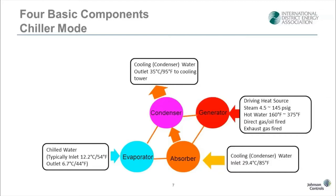This webinar is not about basics of absorption chillers, but let us quickly review the four main components: the evaporator, the absorber, the condenser, and the generator. The unit itself operates under vacuum and water — yes, water is the refrigerant. Lithium bromide is the absorbent, which is simply a salt similar in properties to common table salt. Some sort of driving heat source is put into the generator section — for example, low, medium, or high pressure steam, which must be saturated.